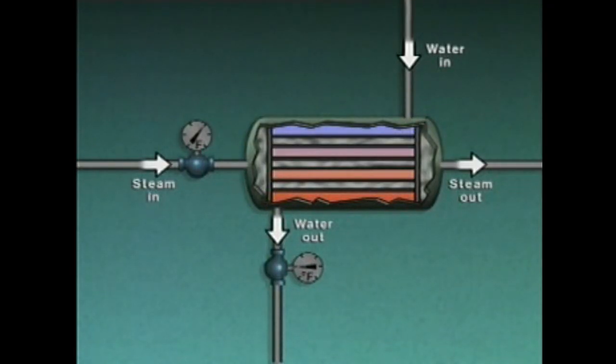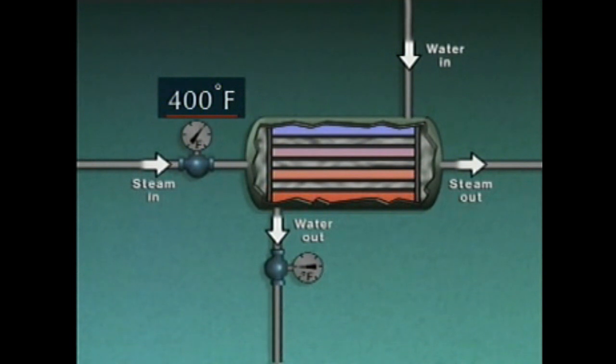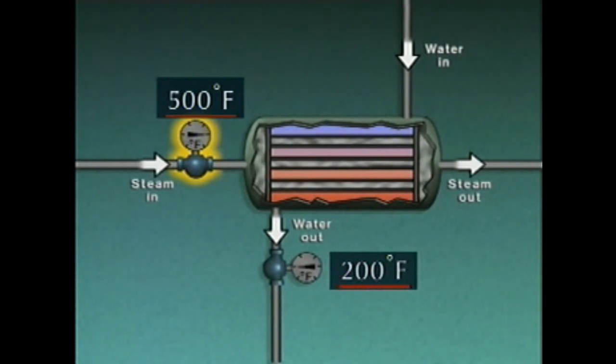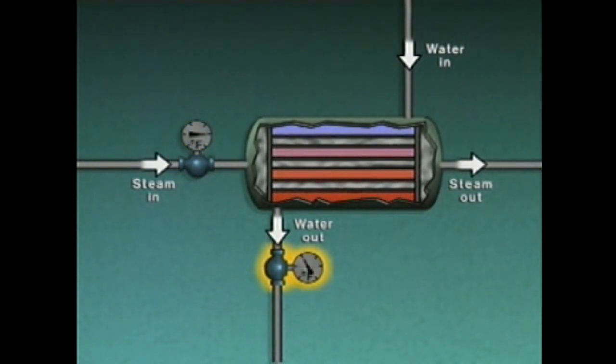Process characteristics such as resistance and capacitance can affect how a control system responds to process disturbances. In a simple heat exchange process, steam flows through tubes in a heater and heats water that flows around the tubes. At the moment, the temperature of the steam entering the heater is 400 degrees Fahrenheit and the temperature of the water leaving the heater is 200 degrees Fahrenheit. If a process disturbance causes the steam temperature to suddenly rise to 500 degrees, the water temperature will remain unchanged briefly, then increase slowly.